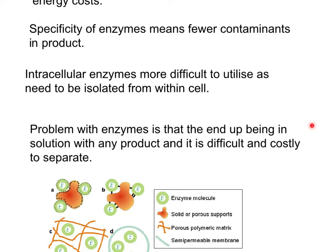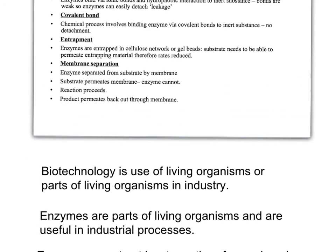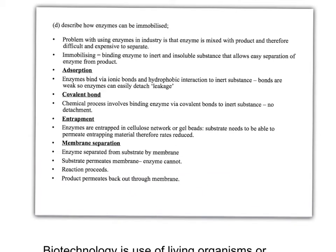This brings us to the idea of immobilized enzymes. The problem with using enzymes in industry is that enzyme is mixed with product and therefore difficult and expensive to separate. Immobilizing enzymes is the answer — we simply bind our enzyme to some sort of inert and insoluble substance. We put that substance into our substrate, the substrate binds to the enzyme which is attached to the inert substance, produces the product, and once the reaction is over, we can simply remove the enzyme attached to our inert substance.